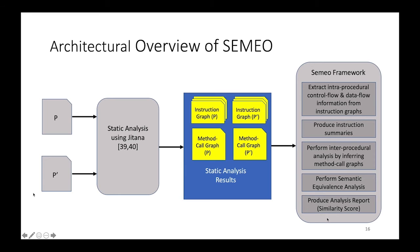Once we have that part, Samuel will take the information and start doing some work. So first, it extracts intraprocedural control flow and data flow information from the instruction graphs, and then based on the information, it produces what we call instruction summaries of the method. It then performs interprocedural analysis by inferring method call graph. This is in case of you have method outlining and inlining. Then it performs semantic equivalence analysis. And finally, it produces analysis report, including the score of the two methods.